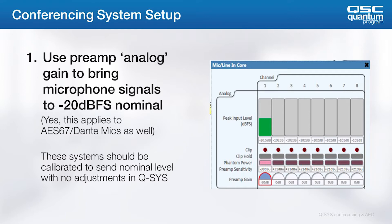Step one is all about gain structure. Calibrate each microphone input to negative 20 dBFS nominal. This applies to all microphones, regardless of whether they come in on analog inputs or via other transports such as Dante or AES67. With analog mic inputs, simply use the analog preamp gain control to achieve this. In external microphone systems, you'll most likely want to log into that system and calibrate the microphones to send the appropriate nominal level.